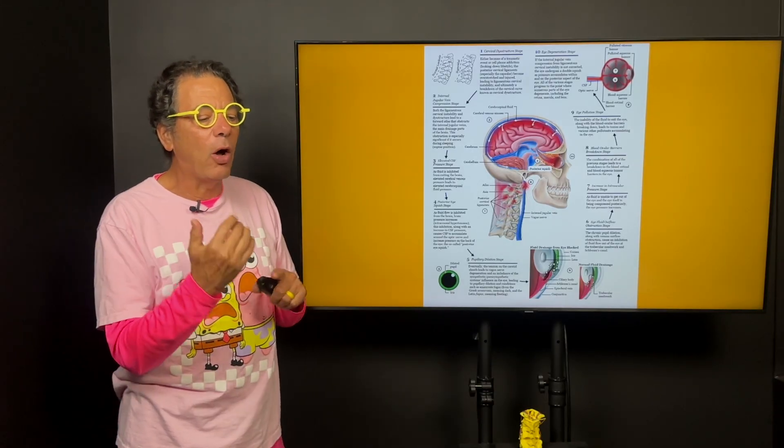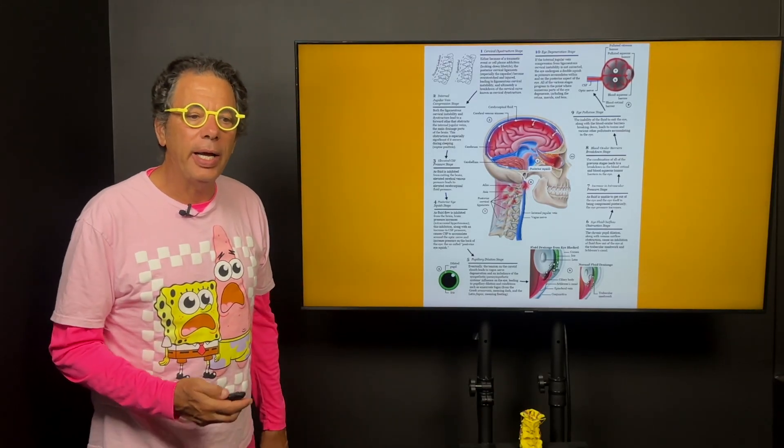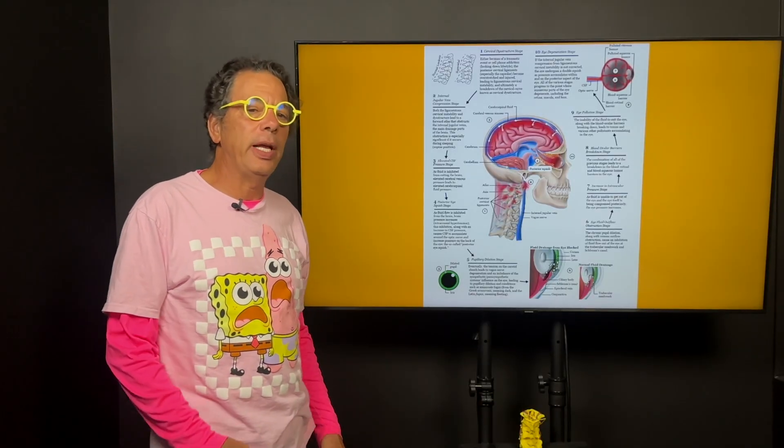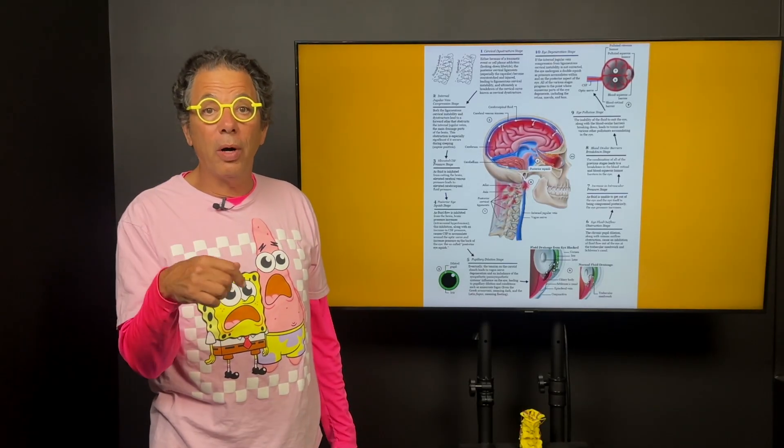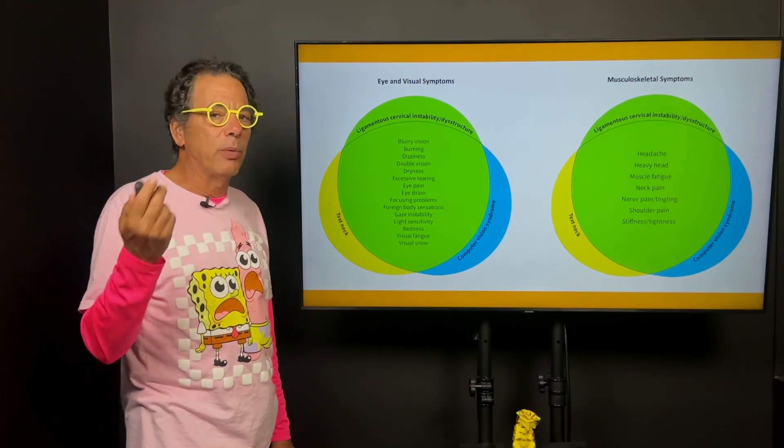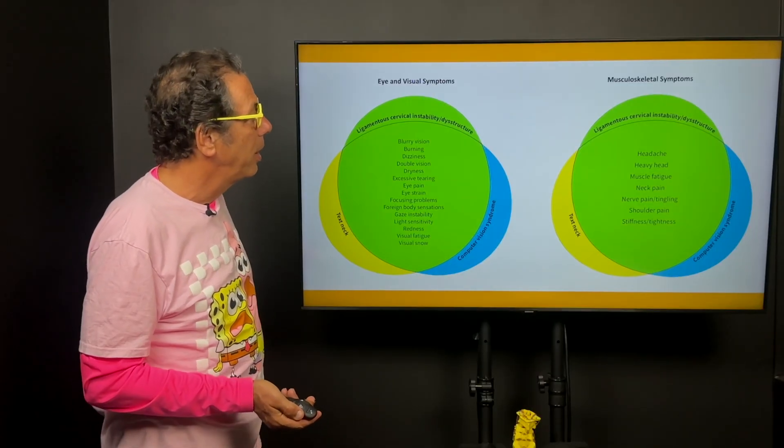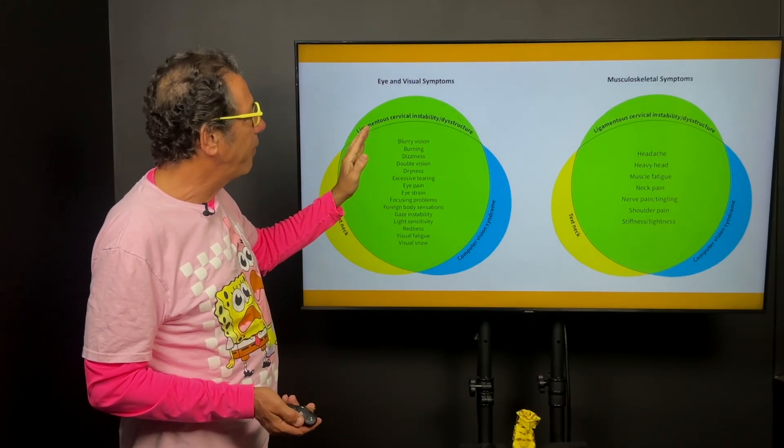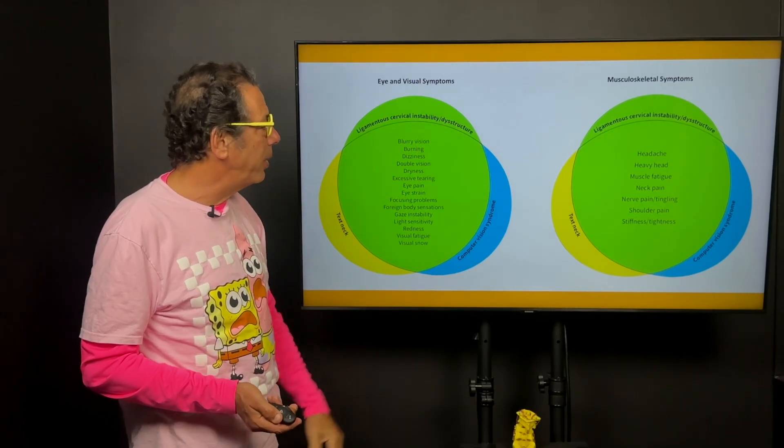So again if a person's not sleeping in a position where the jugular veins are open or they have such a bad neck curve that even when they lay down, even if they extend their neck, sometimes the jugular veins don't open up. So they have to do work on restoring the neck curve.